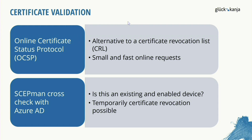SCEPman does a cross-check with Azure AD to verify that these devices exist in Azure Active Directory and are enabled. This protects against old or stolen certificates. For example, if a company member loses their device, you can deactivate it in Azure Active Directory. SCEPman cross-checks with Azure AD, and this provides temporary certificate revocation. If the member finds their device, you can re-enable it in Azure AD, which immediately re-activates the certificate, and the member can rejoin the Wi-Fi or reconnect to a VPN.